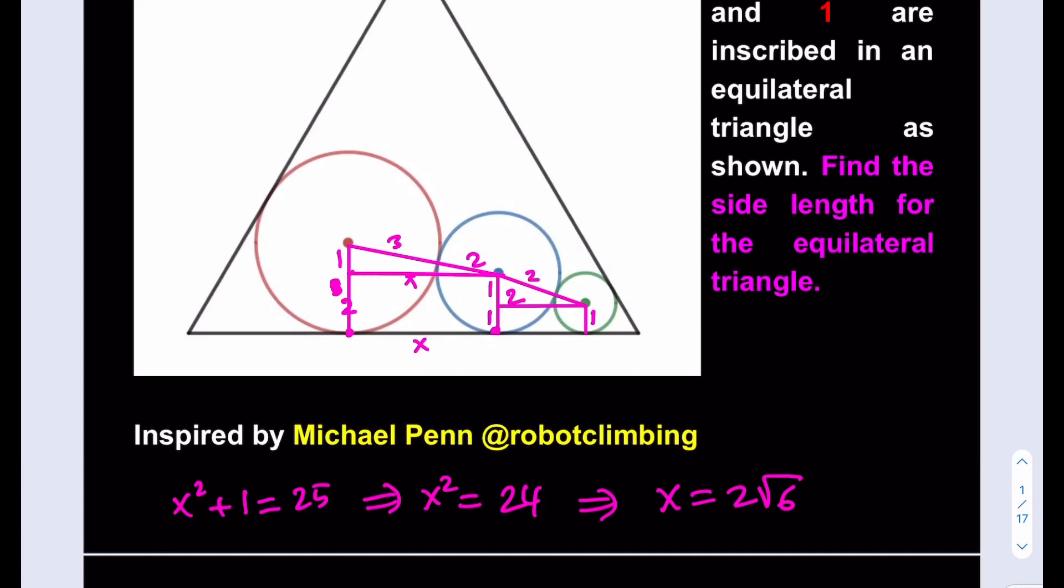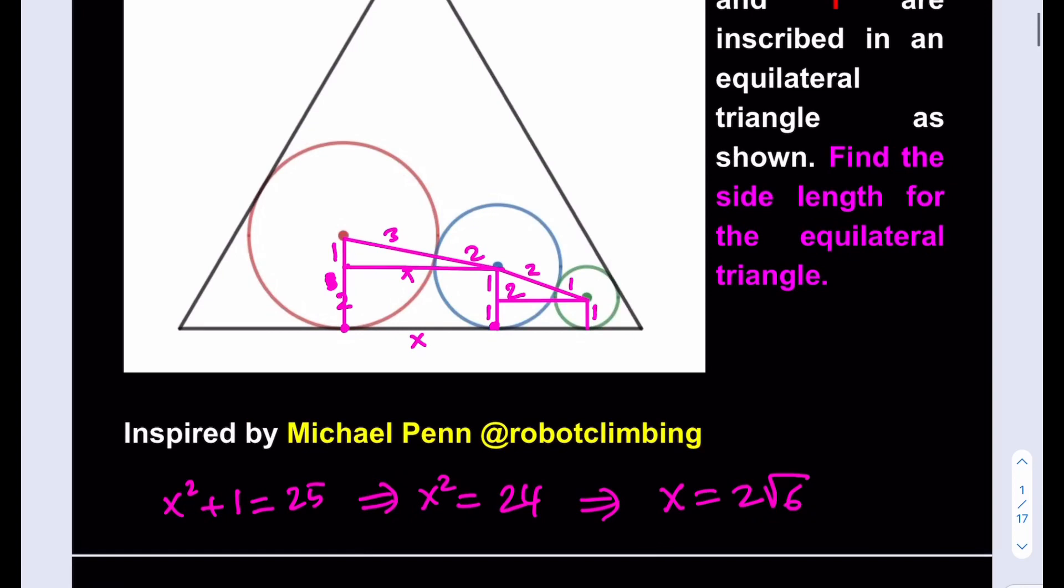This will be 1, this will be 1, and this will be 1 as well. So here we do have a rectangle whose hypotenuse is 3 and one of the legs is 1.